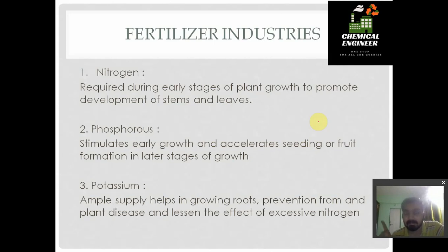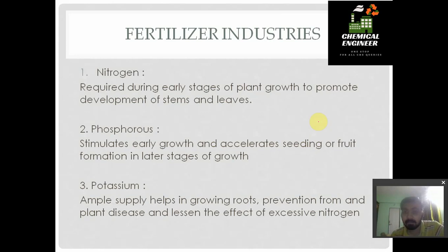During the early stage, the plant requires only nitrogen and potassium. Phosphorus is required when seeding and fruits are needed. Potassium is helpful in growing the roots and preventing the plant from disease. It also lessens the effect of excess nitrogen on the plant, since excess nitrogen may act as a poison. To lessen its effect, we provide potassium fertilizer simultaneously with nitrogen fertilizer.